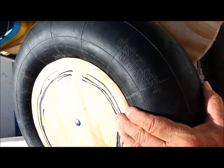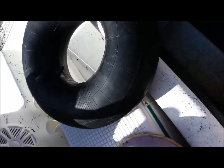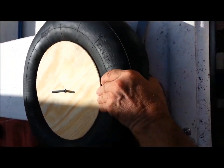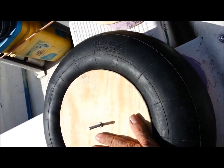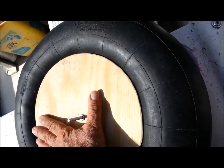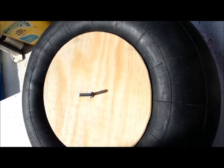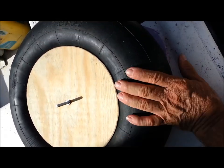So instead of $130 bucks or whatever it is for 20 inch wheelies, I made my own out of some quarter inch plywood, inner tubes that are self-sealing from Lowe's.